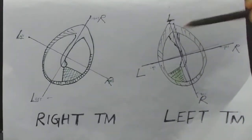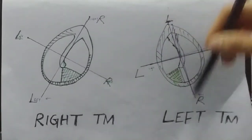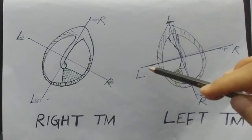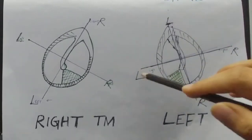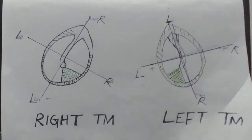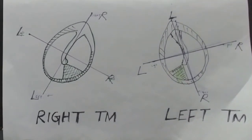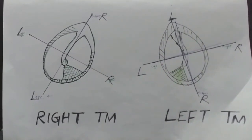So it becomes very easy once we have drawn the skeleton. Always remember: left tympanic membrane — vertical line left to right, horizontal line down to up. Thank you for watching the video, like and subscribe to my channel. Thank you, good night.